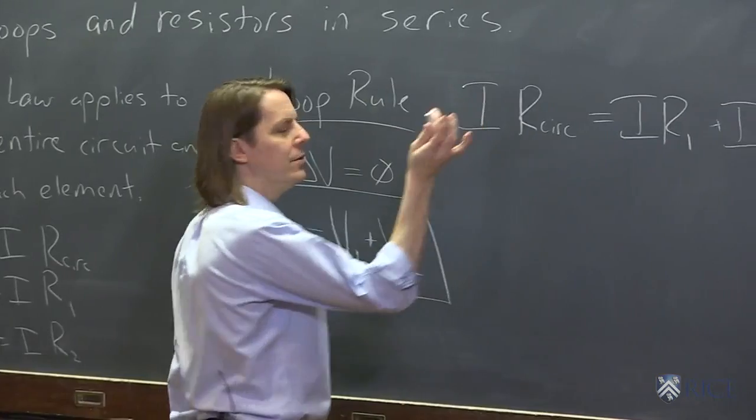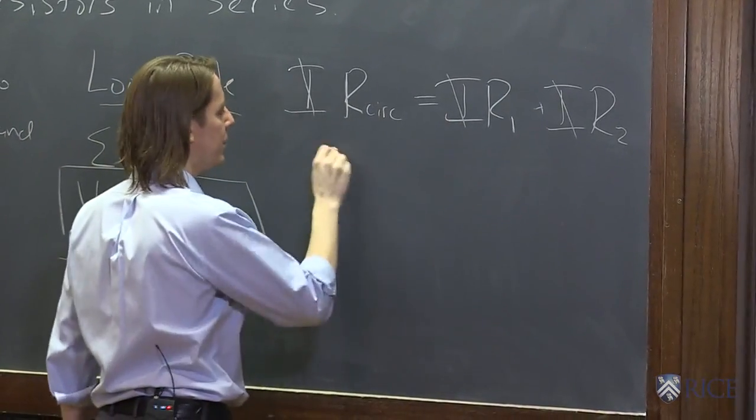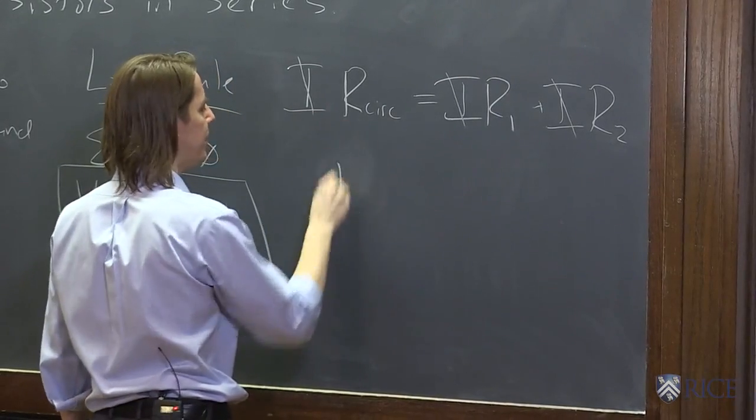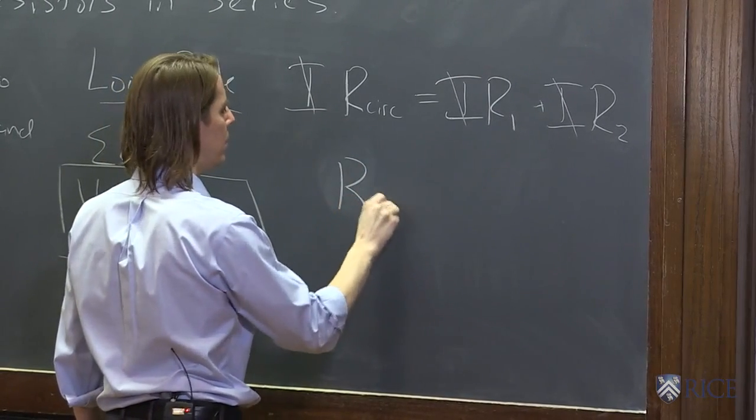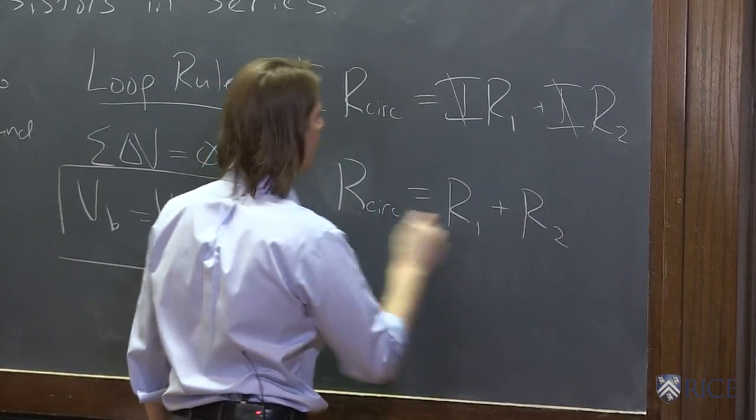So you look at that and you say, oh, I can cancel all the I's. And you get that the resistance of the circuit, the effective resistance of the circuit, is R1 plus R2.